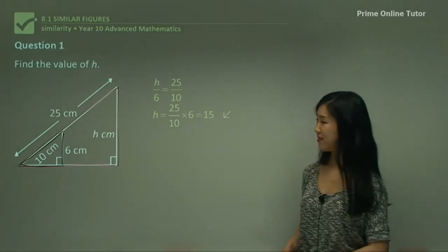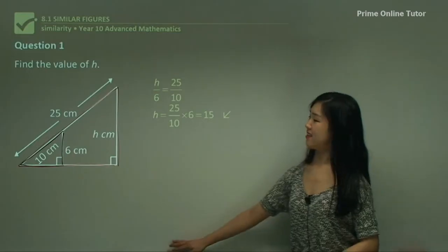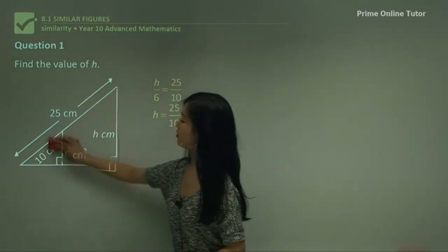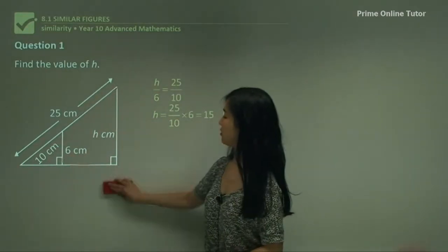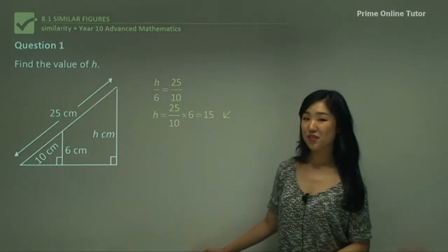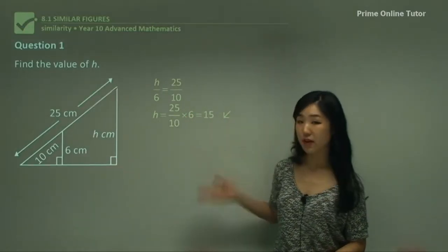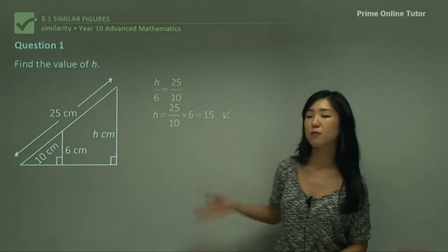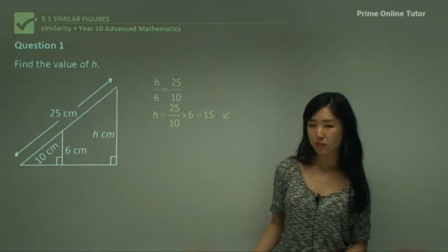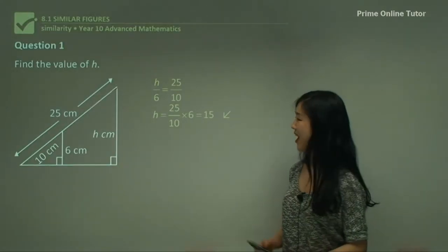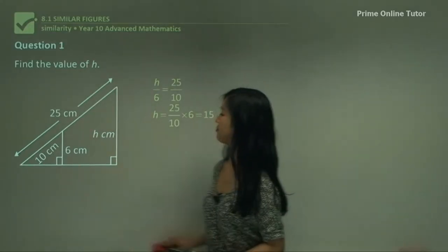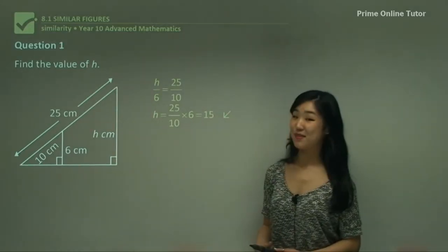So we found that h is 15 — very simple. Make sure you know which side in the bigger triangle corresponds to which side in the smaller triangle. That's probably the most important thing. Let's move on.